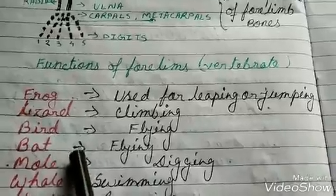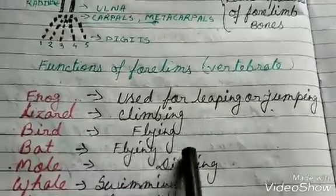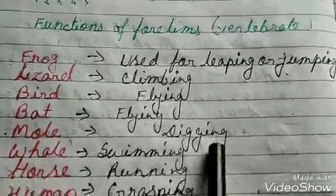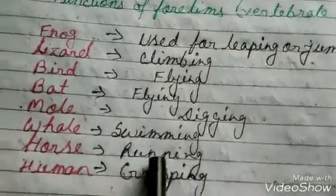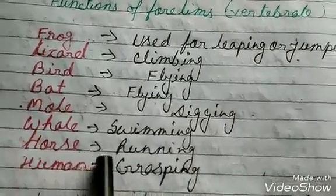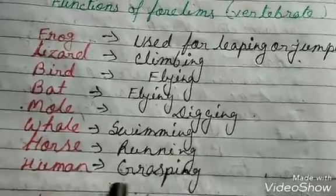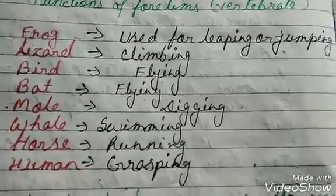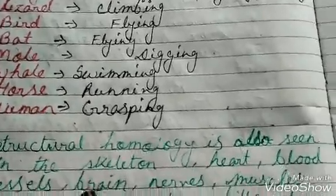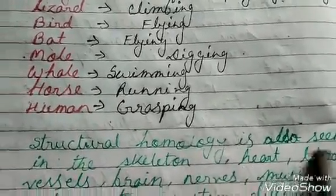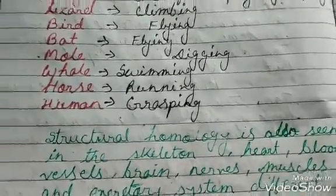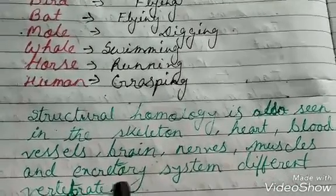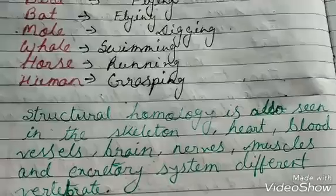The frog uses its forelimb for leaping or jumping; the lizard's forelimb is for climbing. Birds and bats have flying-type forelimbs; in the mole it is for digging. The whale uses its forelimb for swimming, the horse uses it for running, and human beings use it for grasping.